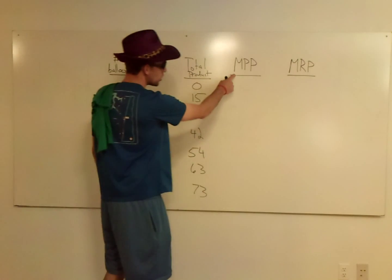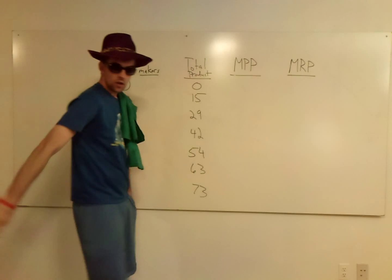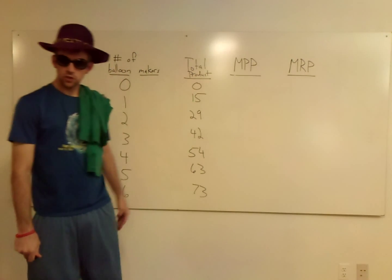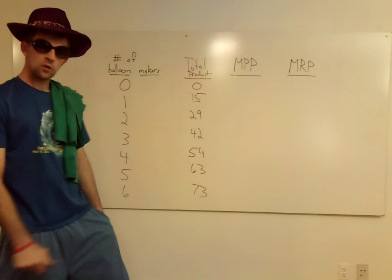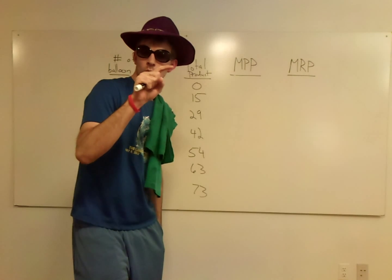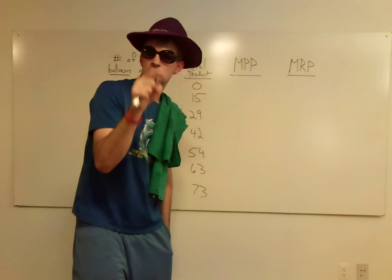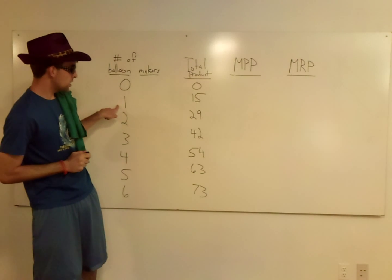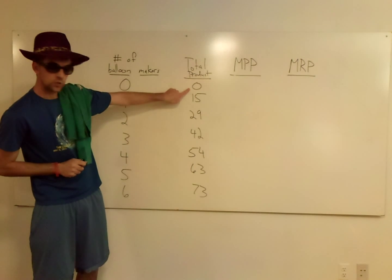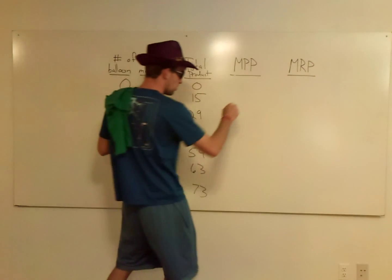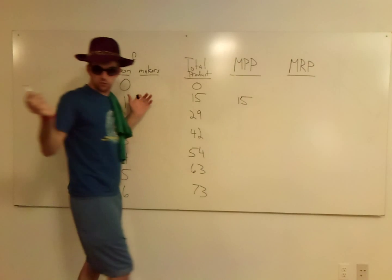When we do the marginal physical product, or the marginal product, sometimes they'll abbreviate on the test, we're looking at what each individual worker brings to the table. So the difference between the total products here. The first worker, if you look, well, when there was zero workers, it was zero. The first worker came in, did 15.